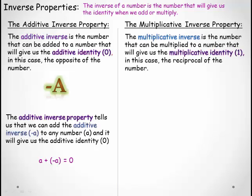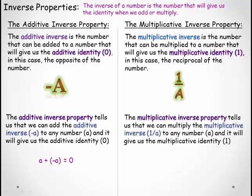The multiplicative inverse is the number that can be multiplied to a number to give us the multiplicative identity, which is 1. Instead of an opposite, we're looking for the reciprocal of the number — so 1/a. The multiplicative inverse property tells us that a × (1/a) will equal 1.